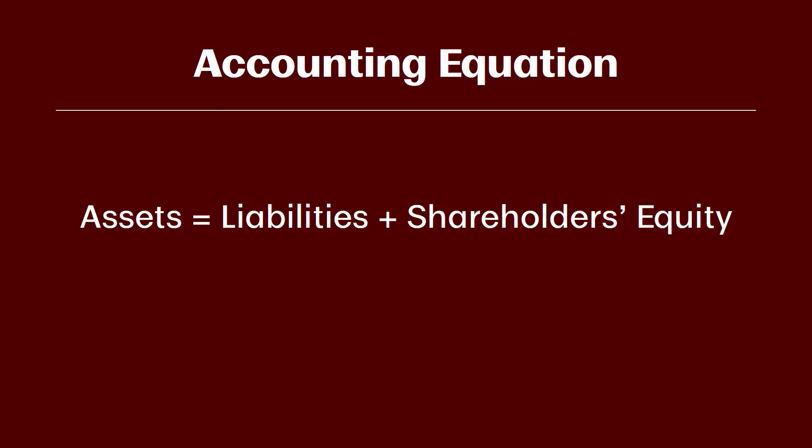Let's look at what this accounting equation means. In accounting, everything has to balance — always. If you increase assets, then either liabilities or shareholders' equity have to increase by the same amount. Or if assets go down, then liabilities or shareholders' equity have to go down by the same amount.